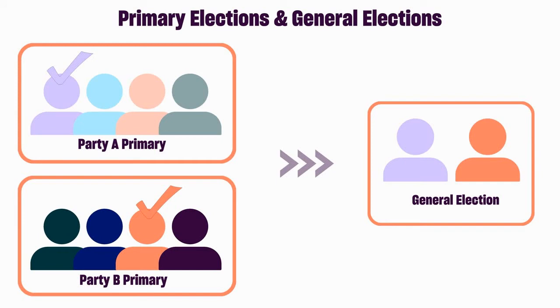There can be multiple primary elections happening at once because there are multiple political parties. For example, because party A and party B are different political parties, they will each have their own primary election.